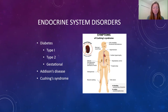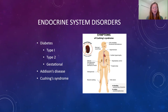Some common diseases and disorders of the endocrine system include diabetes — keep in mind there's type 1, type 2, and gestational — Addison's disease, and Cushing syndrome. Table 5-8 on page 102 has a more detailed list of all the glands of the endocrine system, the specific hormones they produce, and the actions that occur when those hormones are secreted. Review that as well.